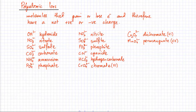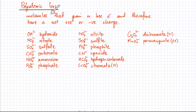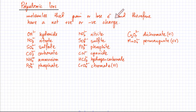We are now going to look at other ions called polyatomic ions. These are basically molecules that don't have a complete outer shell — they consist of several different non-metals combined together, but their outer shells are not complete. To get into a stable configuration, they either gain or lose electrons, giving them a net positive or negative charge.